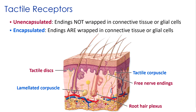Tactile corpuscles are large oval-shaped corpuscles found in the papillary layer of the dermis. They are found in areas where the sense of touch is very well developed — especially the lips, fingertips, eyelids, nipples, and genitals. A fibrous capsule surrounds the entire complex and anchors it to the dermis. These receptors are able to detect very light touch and are very sensitive to shape and textures.